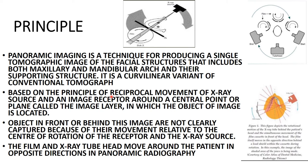It is a curvilinear variant of conventional tomography, based on the principle of reciprocal movement of the x-ray source and the image receptor. The x-ray source moves in one direction while the image receptor (film) moves in the opposite direction — this is known as reciprocal movement around a central point or plane called the image layer. The film and x-ray tube head move around the patient in opposite directions, both present extra-orally.